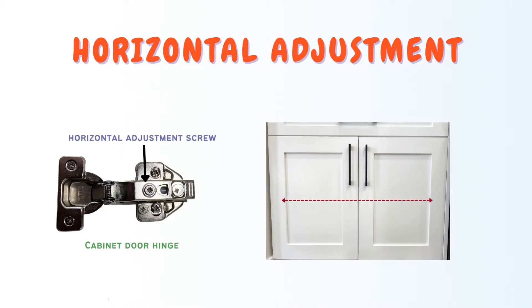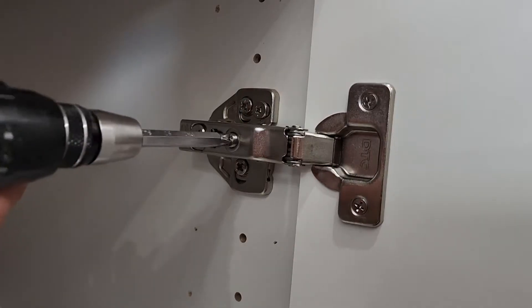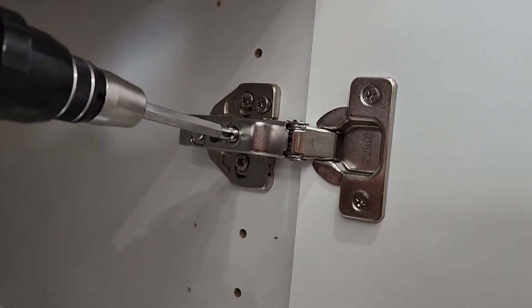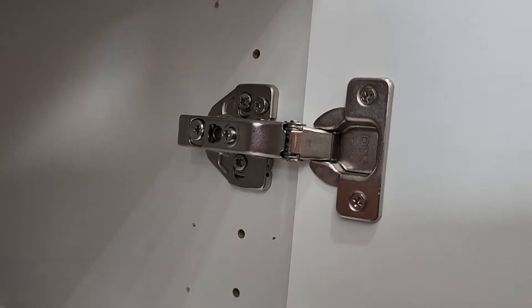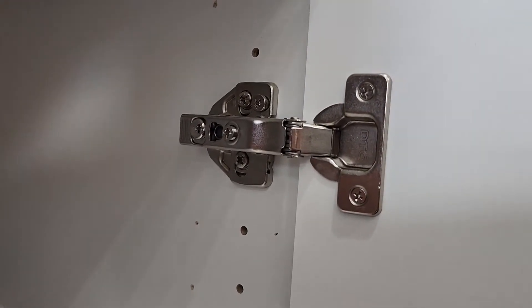The second screw here - if you tighten or loosen it, it will move the door left or right, which is the horizontal movement.